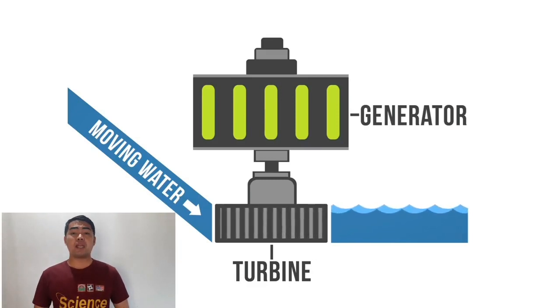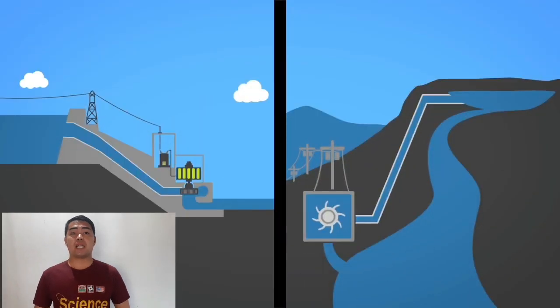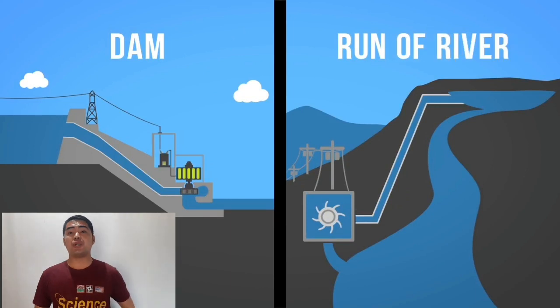There are two main types of hydroelectricity production. Number one is dam. Number two is run-of-river.